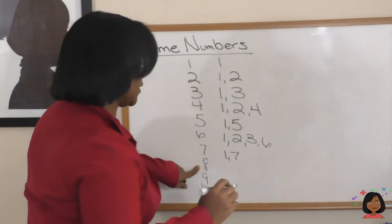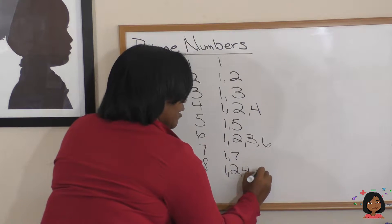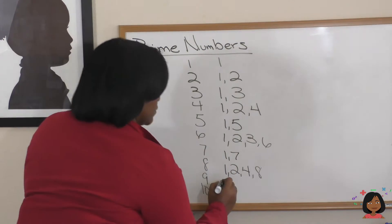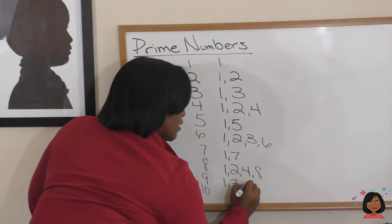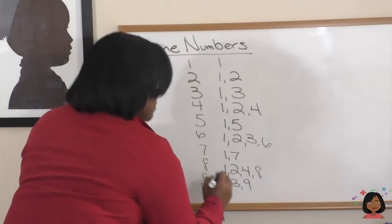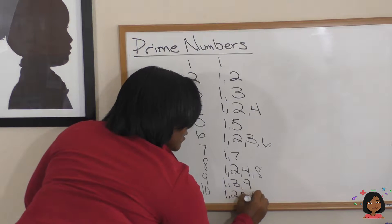What about 8? We've got 1, 2, 4, and 8. How about 9? 1, 3, and 9. And what about 10? 1, 2, 5, and 10.